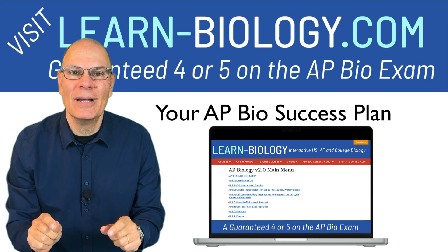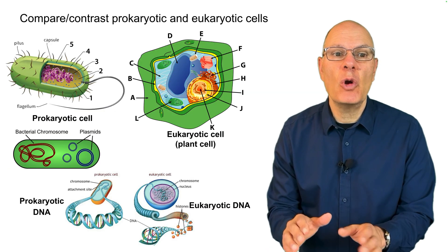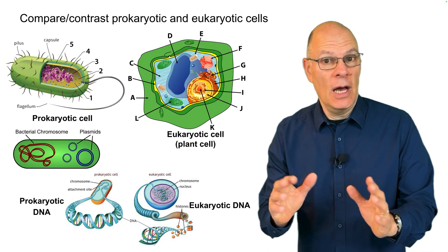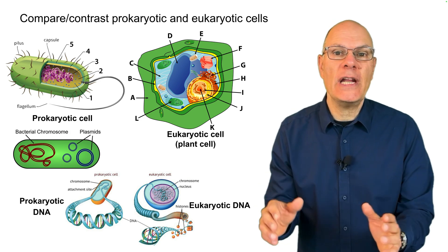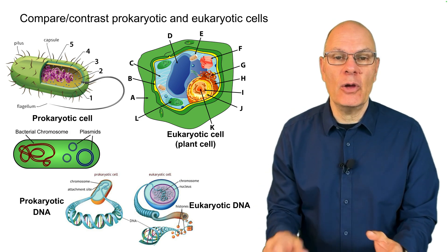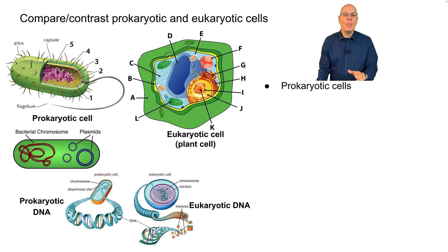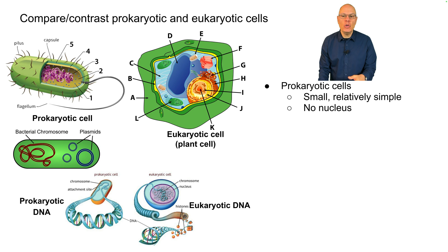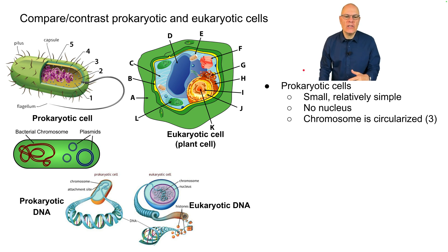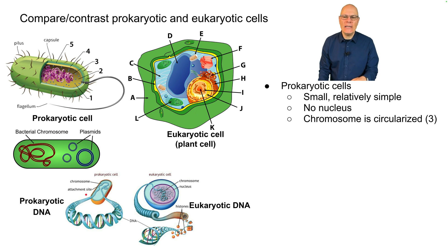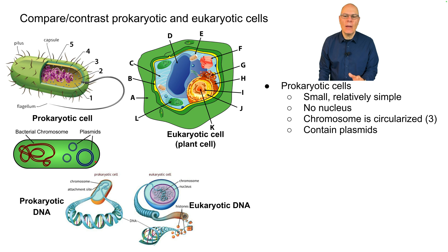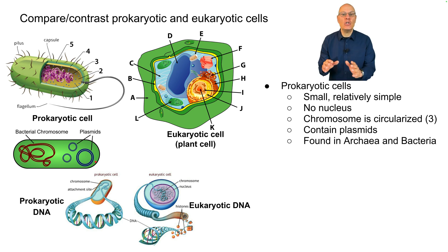Among living organisms, there's a great divide between prokaryotes and eukaryotes. Prokaryotic cells are small and relatively simple — they have no nucleus, their chromosome is circular meaning the beginning and end meet up, and they contain extra-chromosomal pieces of DNA called plasmids. They're found in two of life's three domains: the Archaea and the Bacteria.